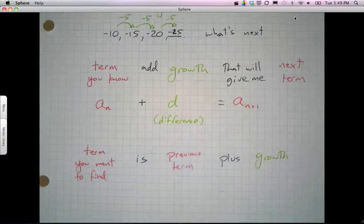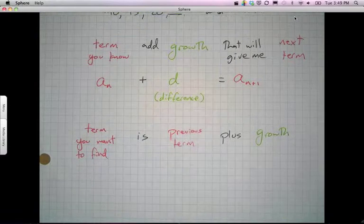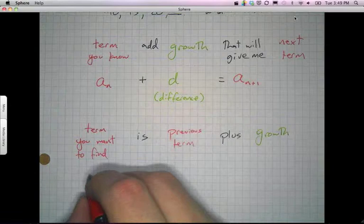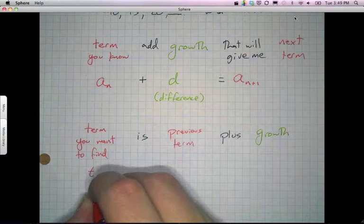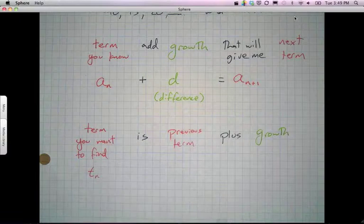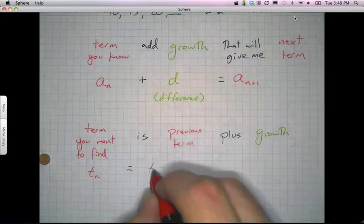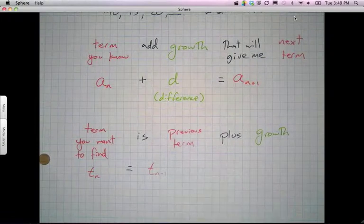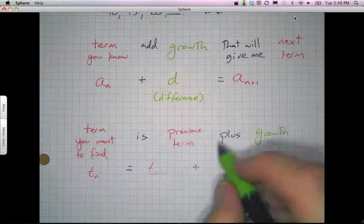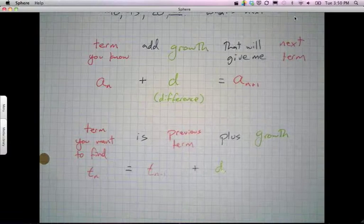This is another way of finding the exact same thing, but the equation for this would look slightly different. You could also say the term that you want, in this case I'm going to use t sub n, and it's a little bit of a different notation, but it means the same idea, is equal to the previous term, which in this case is going to be the term n minus 1, plus my difference, which in this case is d. And that's another way to write the exact same idea.